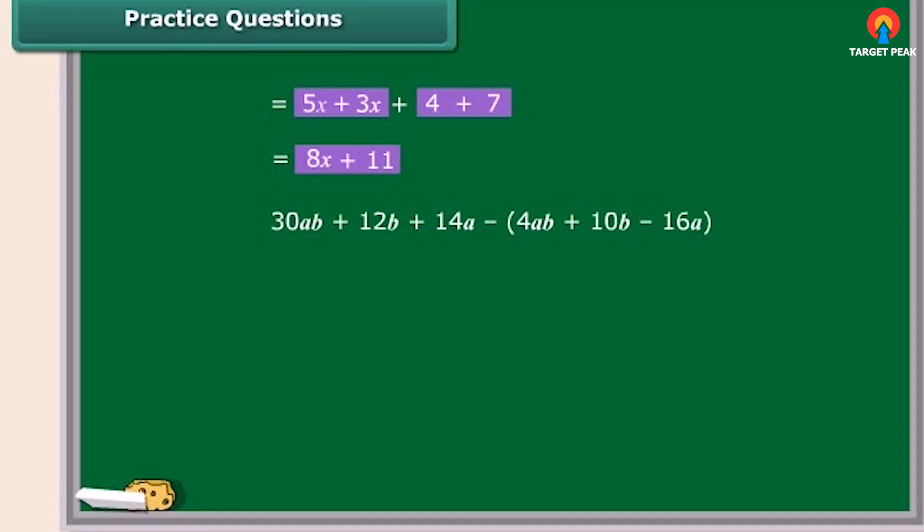Now, the question is to subtract 4ab plus 10b minus 16a from 30ab plus 12b plus 14a. We have to use the same criteria as we have used for the addition. Bring the like terms together taking into consideration the sign of the terms. So, on rearranging, we get 26ab plus 2b plus 30a.